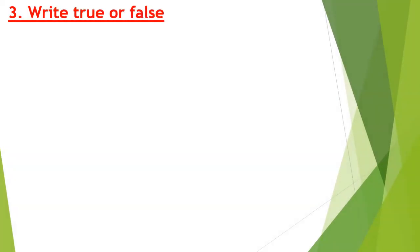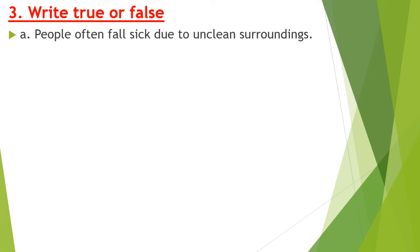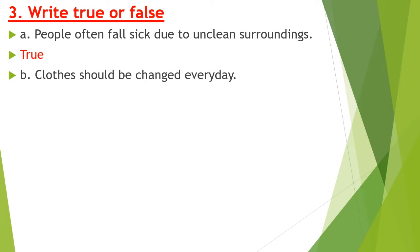Exercise number 3 is write true or false. Part A — people often fall sick due to unclean surroundings. This is true; if we have unclean surroundings, we will fall sick. Part B — clothes should be changed every day. This is also true; to avoid germs, we should change our clothes every day.